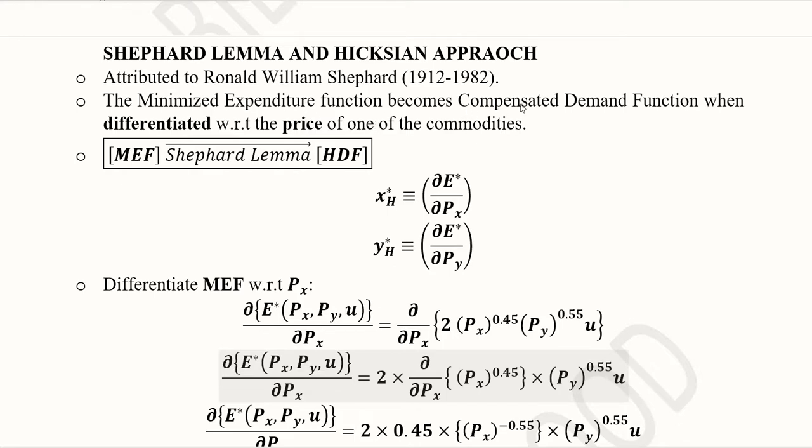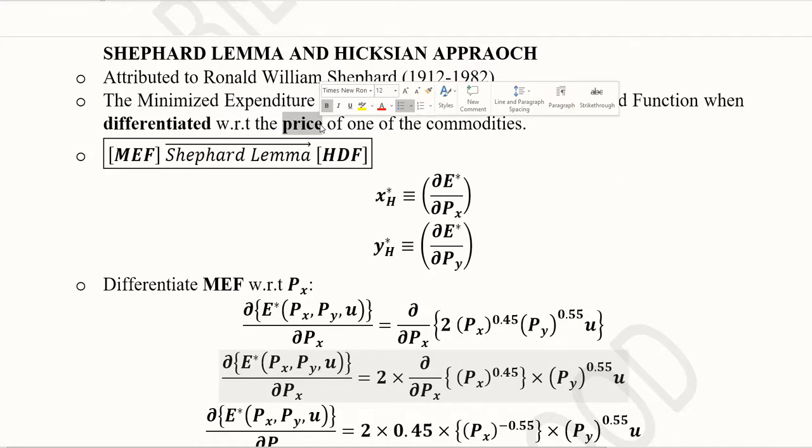The method is simple that if we want to get the compensated demand function or the Hicksian demand function, we simply differentiate the minimized expenditure function with respect to the price of that certain commodity and then we will be able to get it.